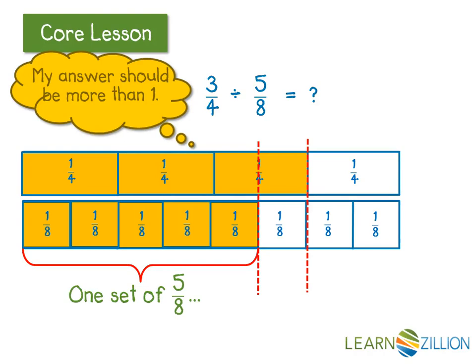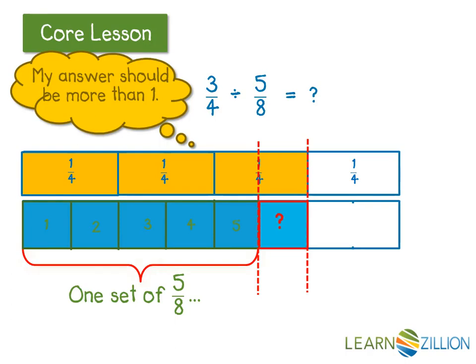In order to determine how much of a remainder I have, I need to look at this piece in its relation to the whole set of 5 eighths. When I look at this piece in its relation to this set of 5 eighths, I can see that it's the same size as 1 out of the 5 equal parts.